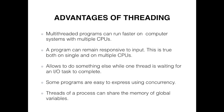The first advantage of threading is that multi-threaded programs can run faster on computer systems with multiple CPUs, because threads can be truly concurrent on multi-CPU systems. The second advantage is that the program can remain responsive to input at all times — this is true for both single and multiple CPU computer systems.